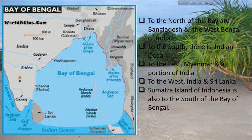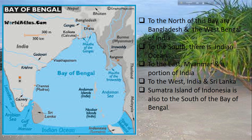Let us know about the Bay of Bengal, situated to the south of Bangladesh. The vast expanse of water to the south is named the Bay of Bengal; it is an extended portion of the Indian Ocean. Innumerable rivers including the Brahmaputra, Meghna, Padma and Karnafuli — the major rivers of Bangladesh — have merged with the Bay of Bengal. Many rivers of India also, including the Ganga, Mahananda, Godavari, Krishna and Kaveri, have merged into the Bay of Bengal. And the two rivers of Myanmar, the Irrawaddy and the Naf, have also merged with the Bay of Bengal.